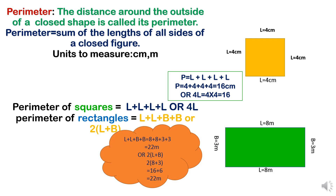What is perimeter? Students, the word perimeter comes from two Greek words: peri and metron. Peri means around and metron means measure. Thus, perimeter is the total distance of all the sides of a closed figure. It is found by adding the length of all sides of a closed figure.